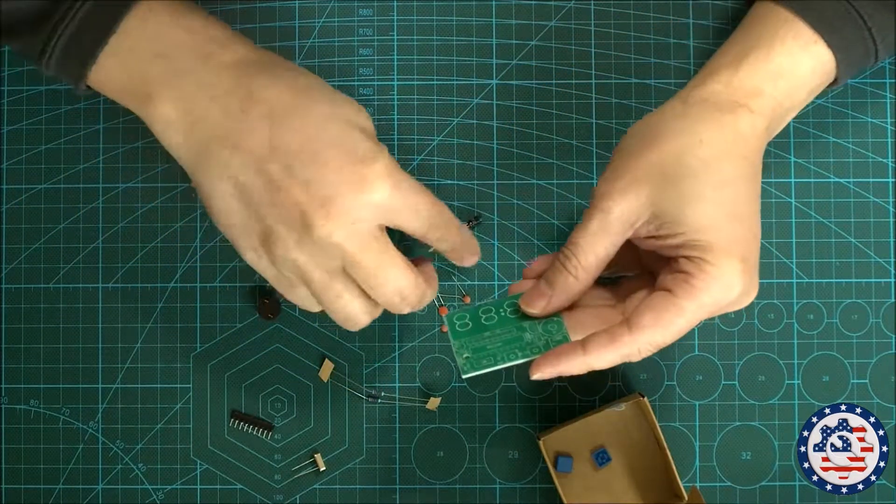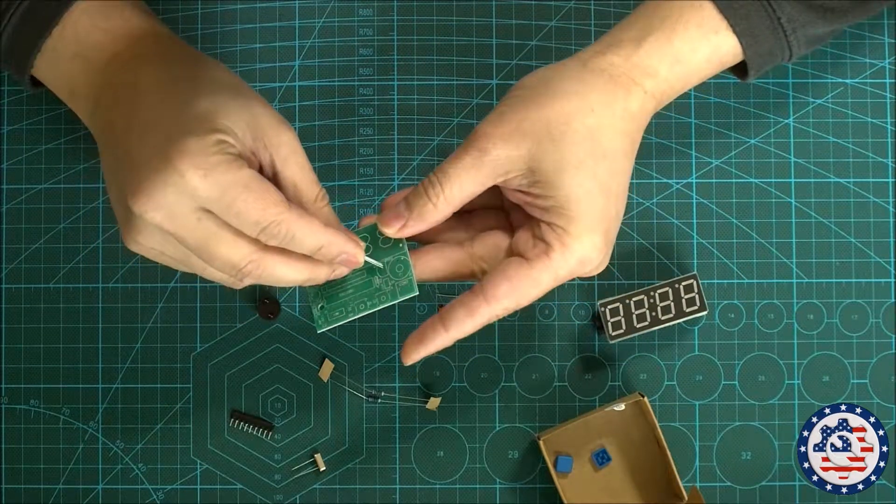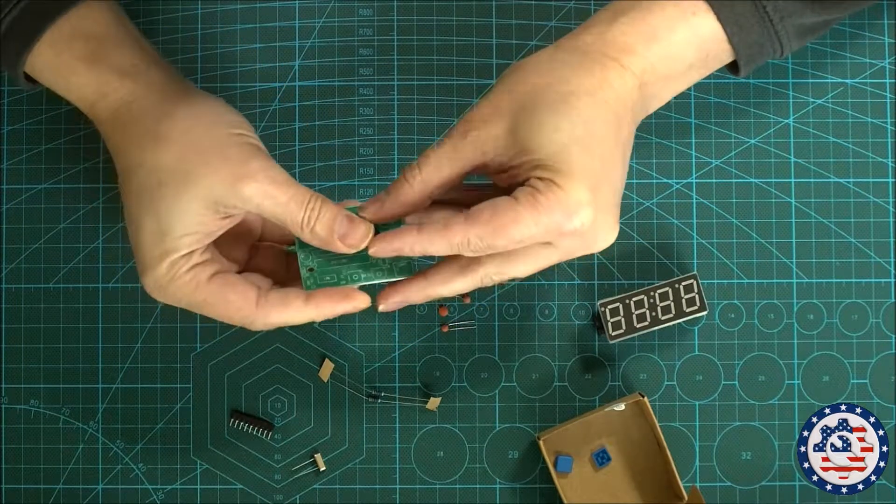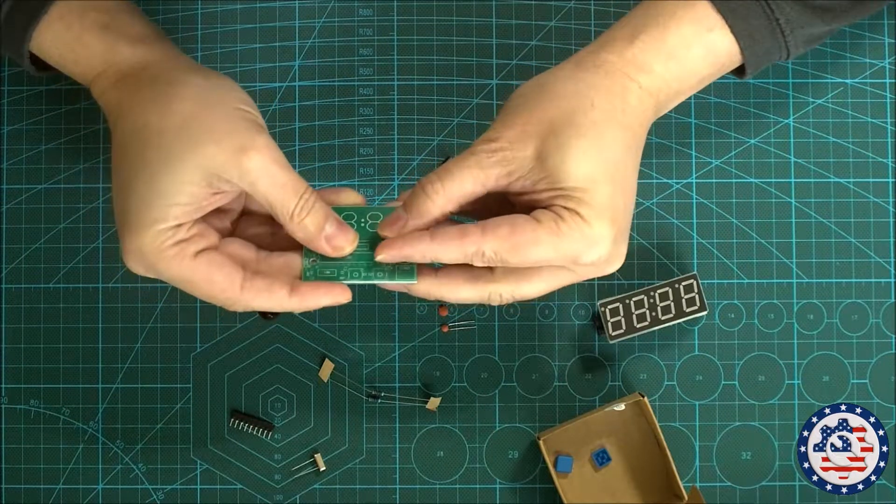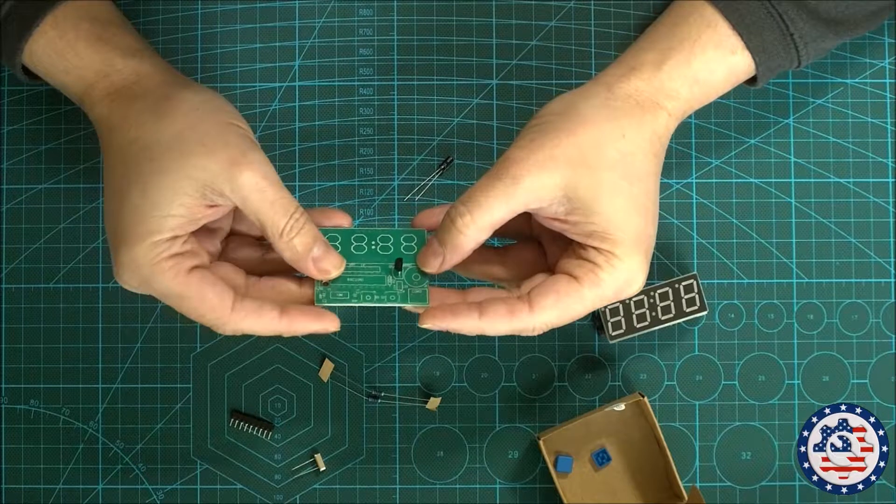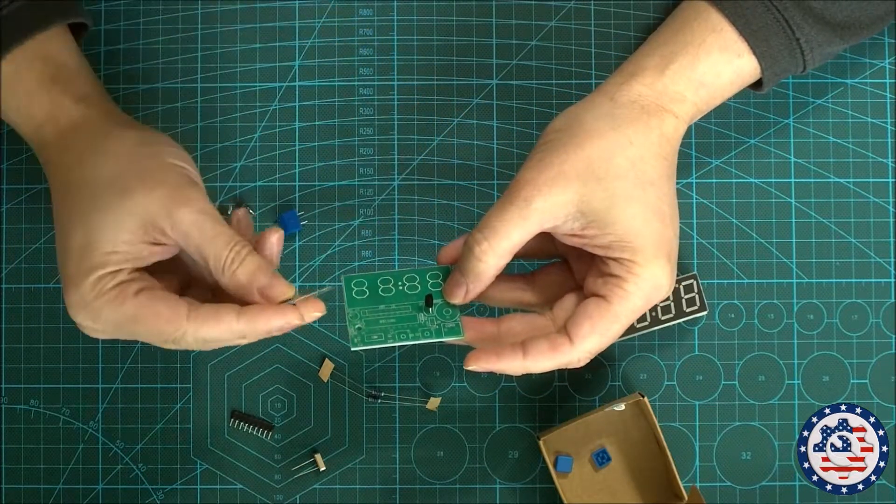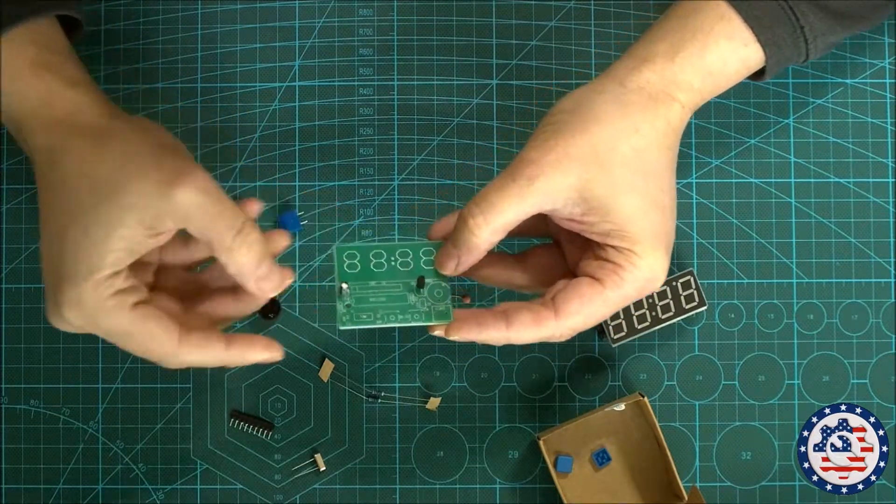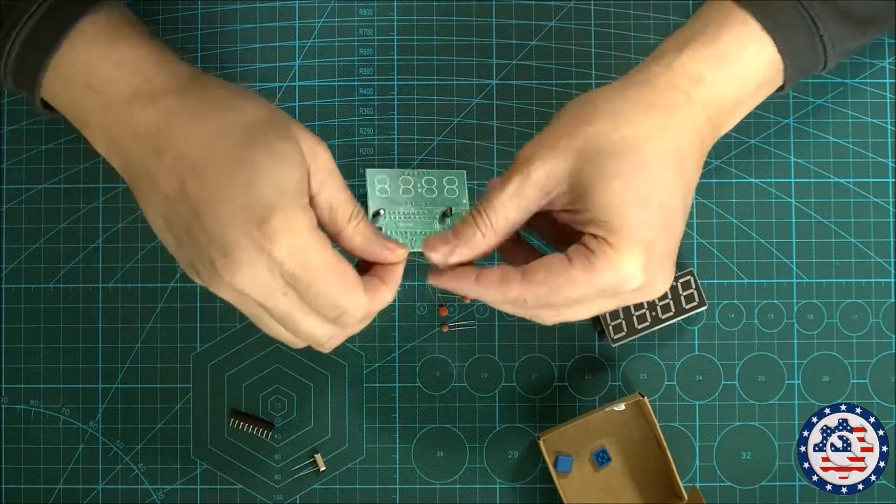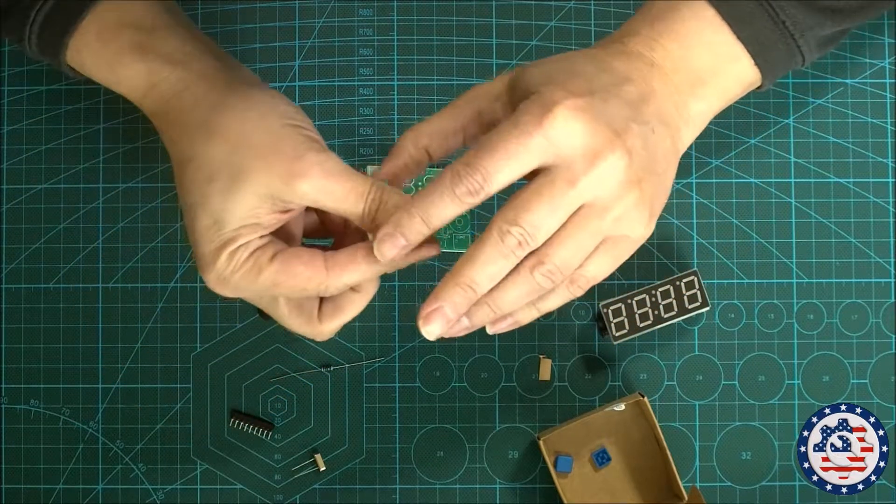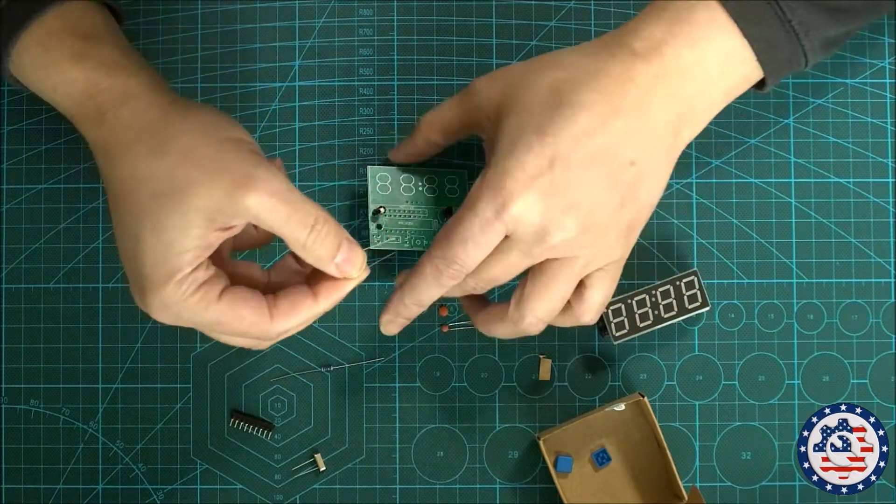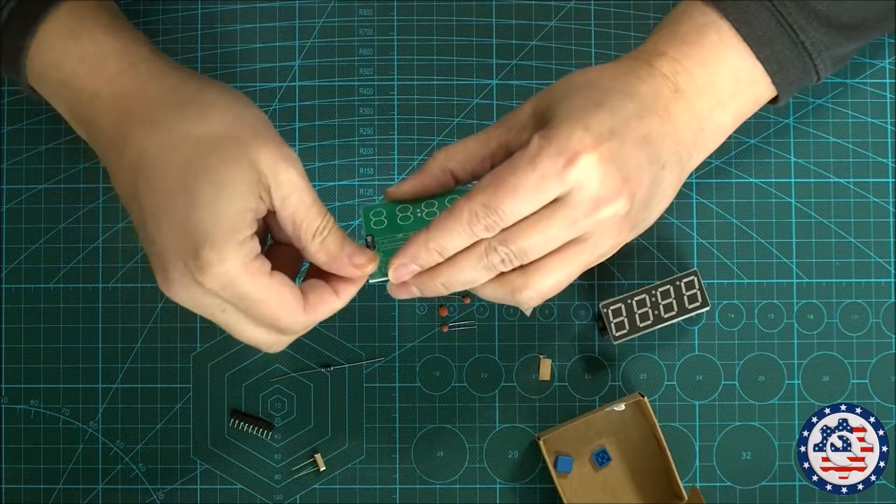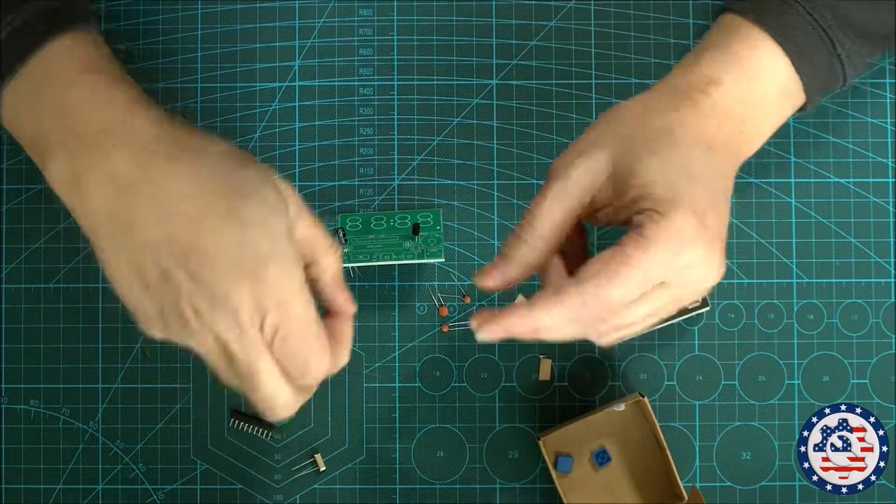So I think what I'm going to start with is placing most of the components in there and then I can solder them in one go. Hopefully that will speed things up a bit. Let's see where the capacitor goes. Yeah, so you've got to be careful about the polarity on the capacitor. Let's put the resistors in. These are straightforward, no polarity required. Let's put the other resistor in as well.